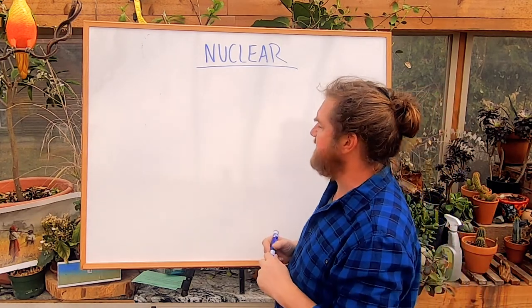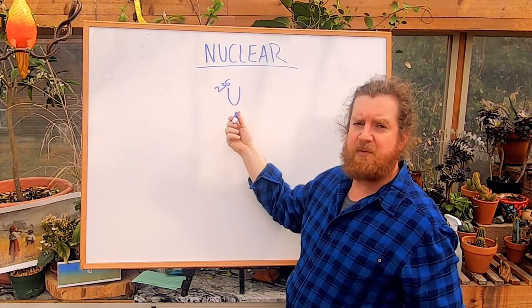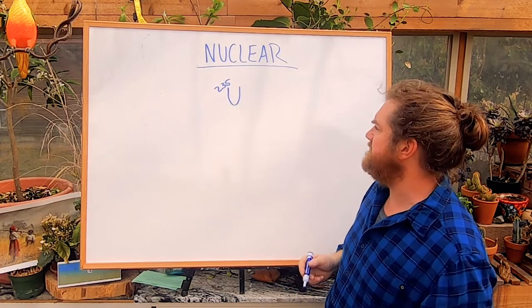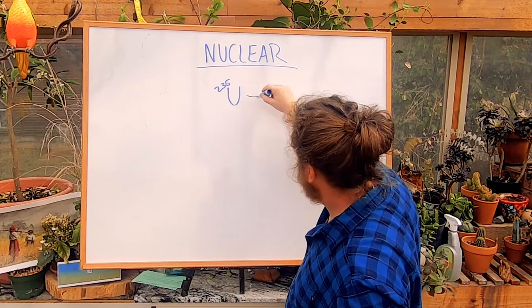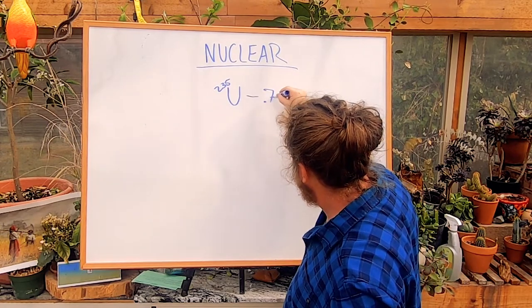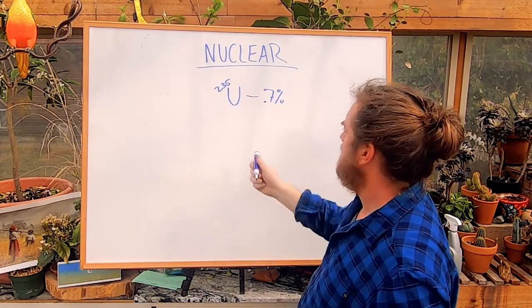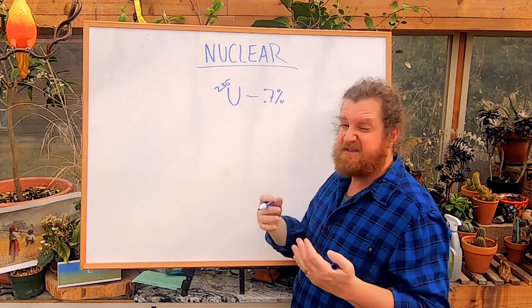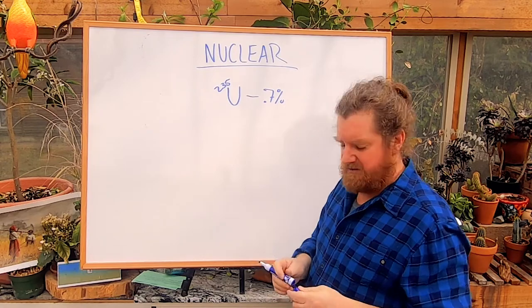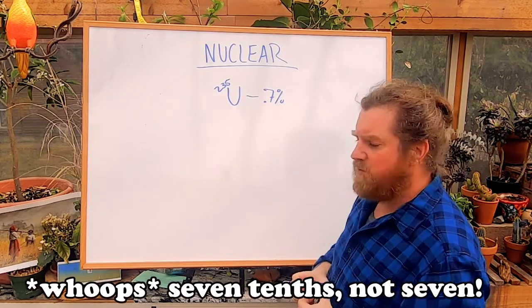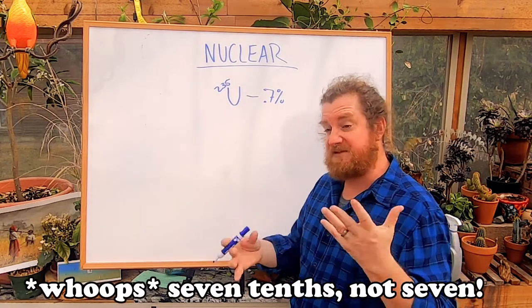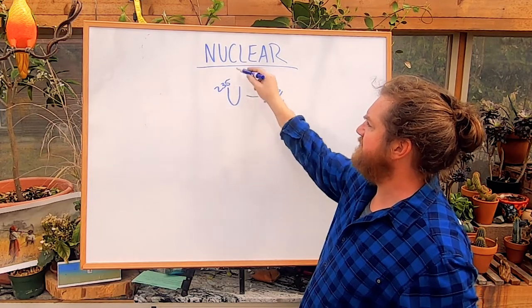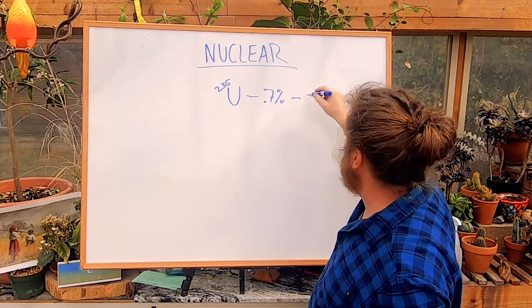We actually take uranium, in particular an isotope of uranium called uranium-235. Naturally, uranium-235 comprises about seven percent of naturally occurring uranium, and we use various methods, particularly something called a gas centrifuge, to concentrate uranium-235.